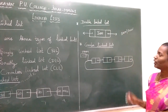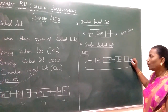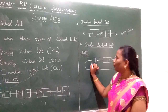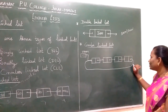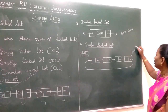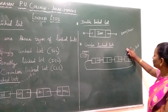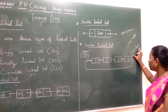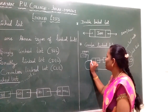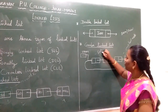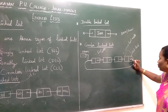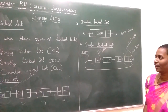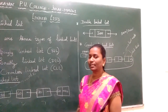Next we have circular linked list. In circular linked list, the last node's link field points back to the first node — similar to how a circular queue works. When the last node's link field points to the first node, we call that a circular linked list. To summarize: singly linked list, doubly linked list, and circular linked list are the three types.